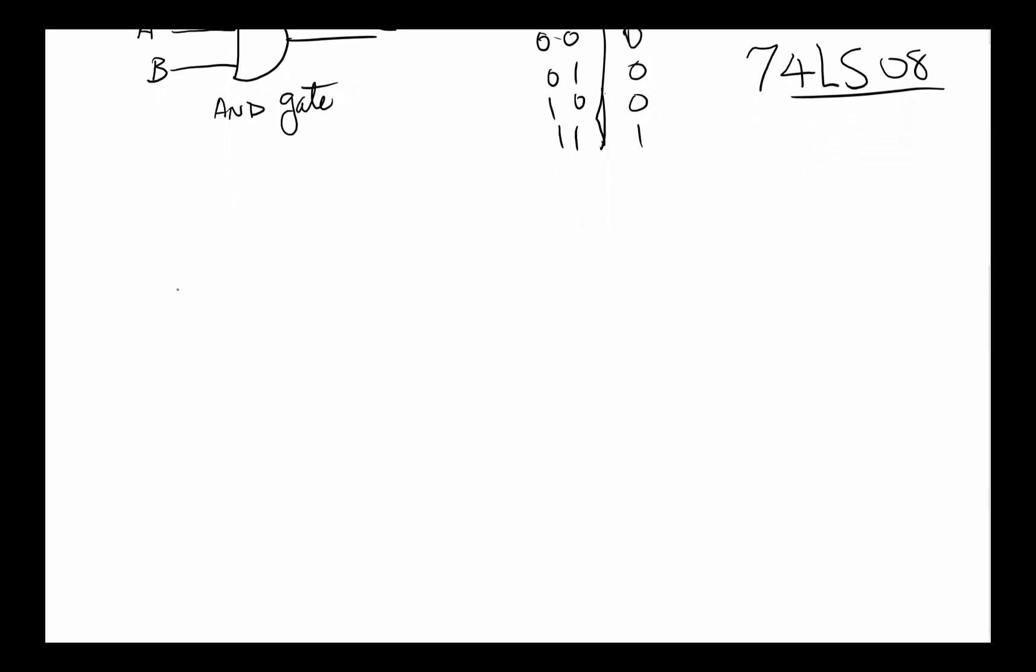The next one we should really talk about is a NOT gate, which is pretty straightforward. This one happens to have one input and one output. The truth table is really simple. You've got one input, so you've got two possibilities, 0 and 1, and the output just basically inverts it. It comes with six of them in a package, and 74LS04 is the designation.